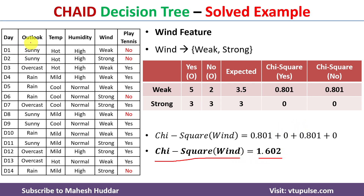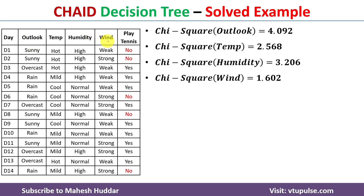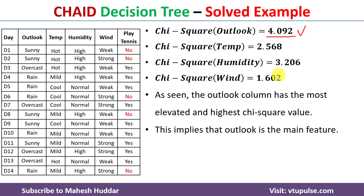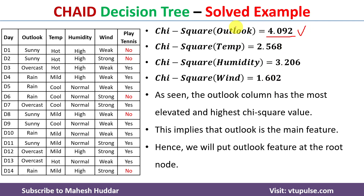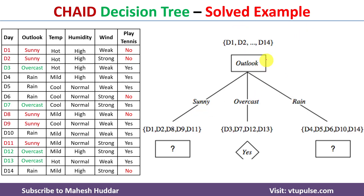We have now calculated chi-square values for all attributes. Comparing them: Outlook = 4.092, Temperature = 2.568, Humidity = 3.206, Wind = 1.602. The chi-square of Outlook is 4.092, which is the maximum. Because of that, Outlook will be considered as the root node, and we will start building the tree.